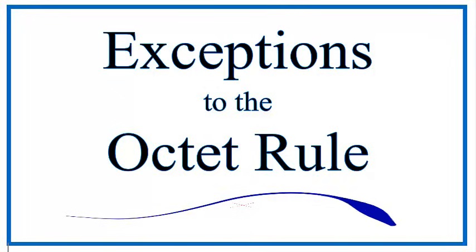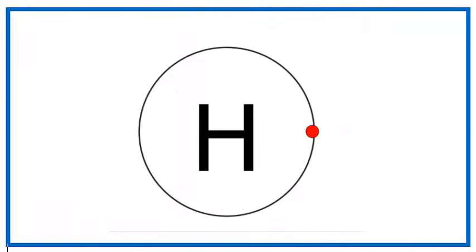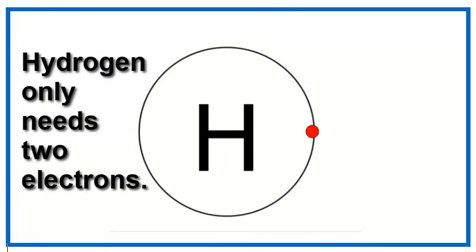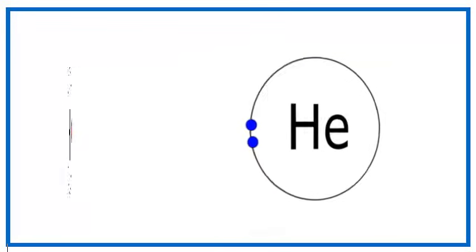The first exception, and probably one of the more important ones, is hydrogen. Hydrogen has one valence electron. In fact, it only has one electron. To complete that first energy level, there only need to be two electrons. So hydrogen will bond with itself or other atoms so that it can have two electrons. That's the same configuration as the noble gas helium.